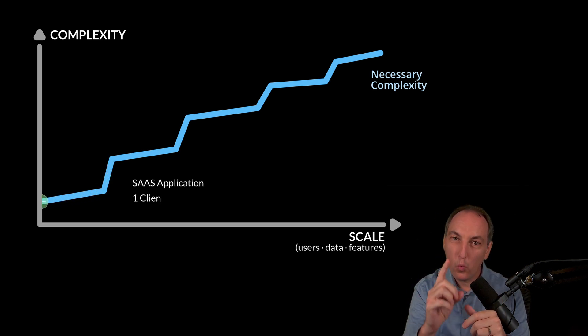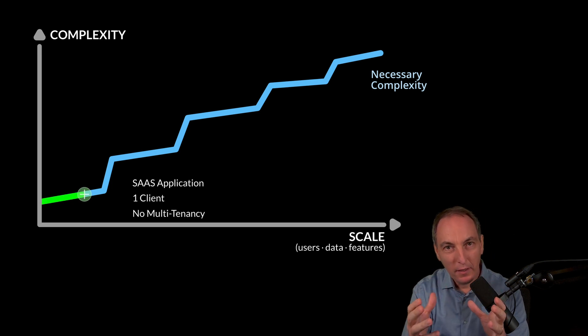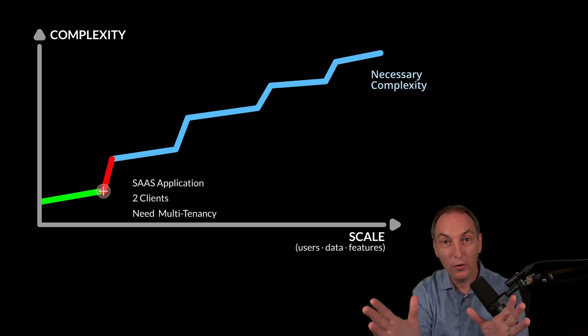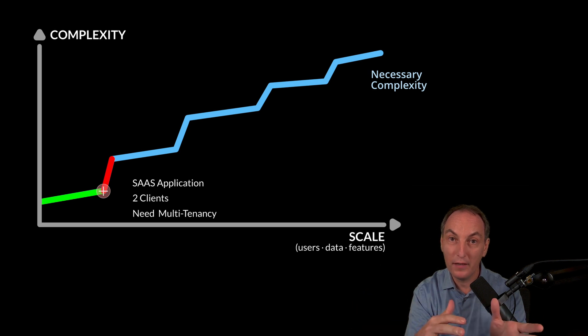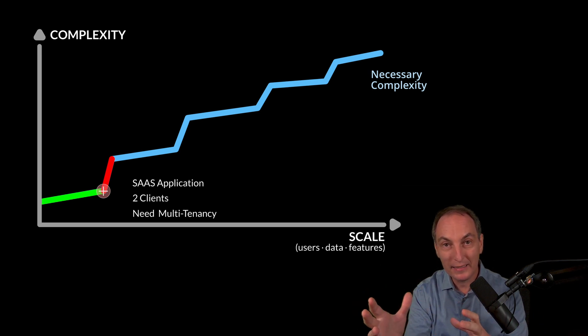For example, if we were going to do a SaaS application with one client, we wouldn't need multi-tenancy. But the issue is that as soon as we hit the two clients mark, then we need multi-tenancy, and we have a short amount of time to implement it. Then everything goes haywire because either we put two clients in a single tenant architecture as a hack, which is very bad, or we rush the implementation of multi-tenancy, which is almost equally as bad.